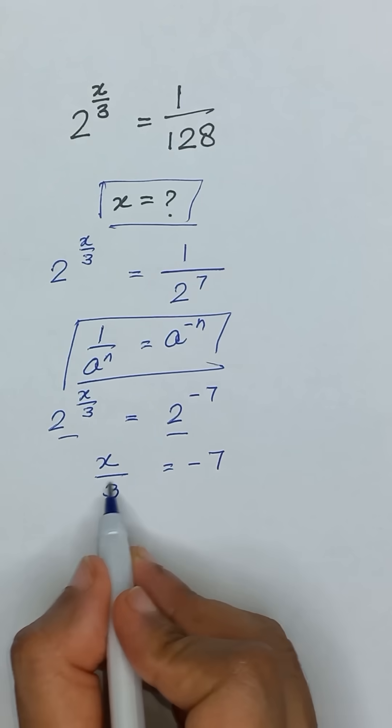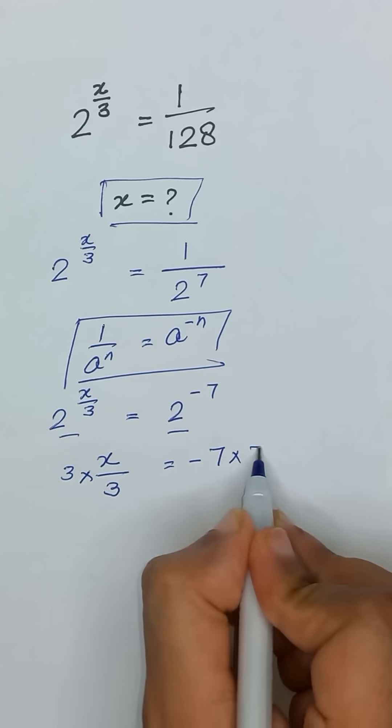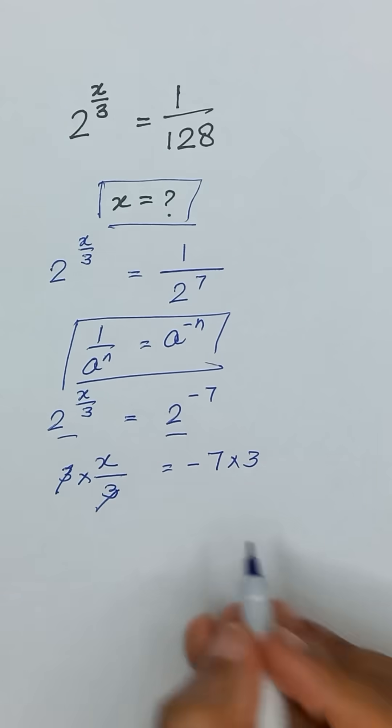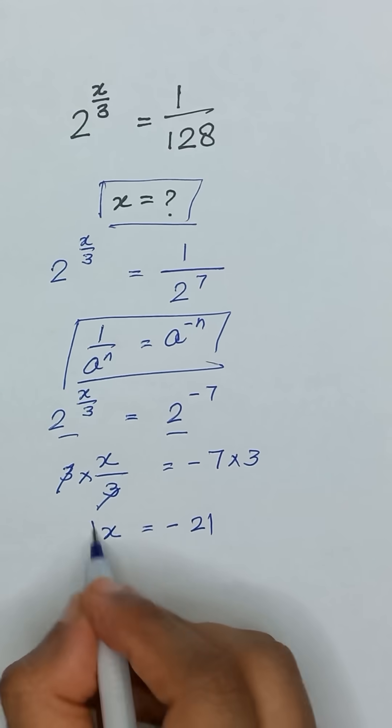Now to remove this denominator, we will multiply 3 on both sides. This 3 and 3 will be cancelled out, and x will be equal to minus 7 times 3, which is minus 21.